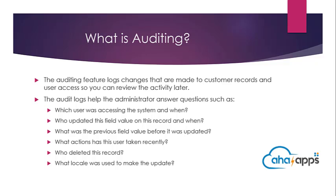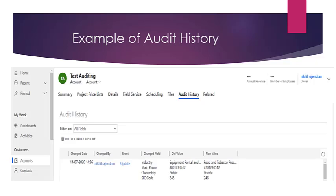What was the previous value before it was updated? Let's take a look at what a typical row of an audit log looks like. A typical row of audit data will have the change date — when that particular field value was changed — who changed it, and what was the event.